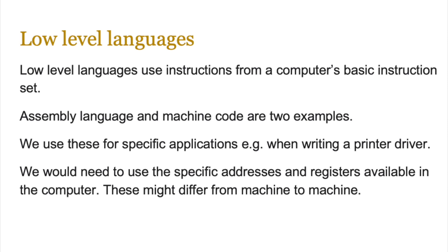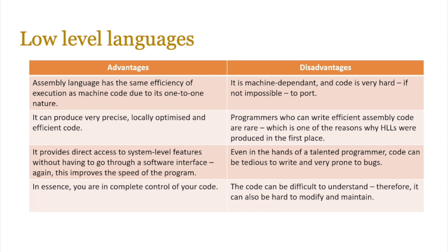Low-level languages use instructions from a computer's basic instruction set. Assembly language and machine code are two examples. We use these for specific applications, for example when we want to write a printer driver and operate directly with the hardware layer. In that case we need to use specific addresses and registers available in the computer, and these might differ from machine to machine. Assembly language has the same efficiency of execution as machine code due to its one-to-one nature. It can produce very precise, locally optimised, and efficient code, and it provides direct access to system-level features without going through a software interface, which helps improve the speed of the program.